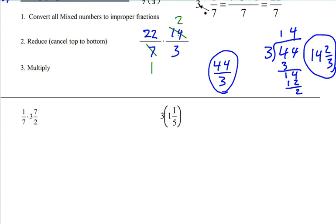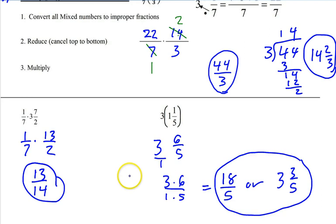All right, so I want you to try these two. Remember, take your mixed number, change it to an improper, and then multiply them after you reduce. All right, so give them a shot, hit pause. All right, and these are the answers you should have gotten. All right, thank you.